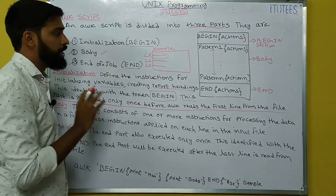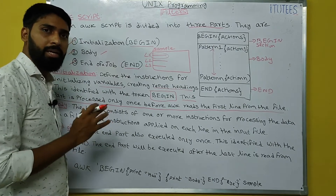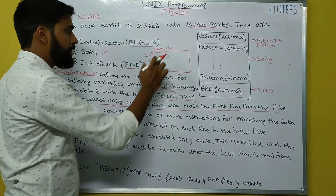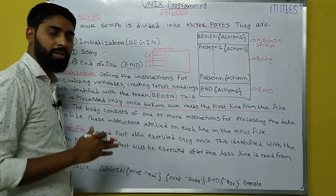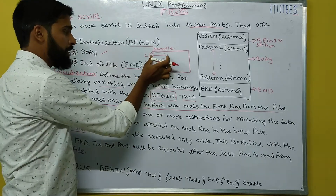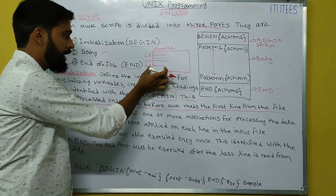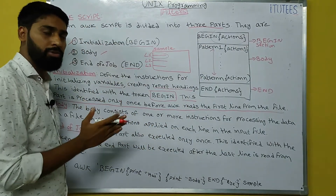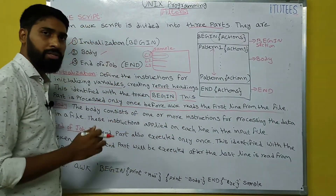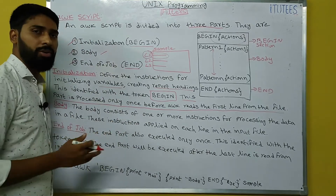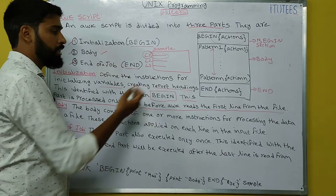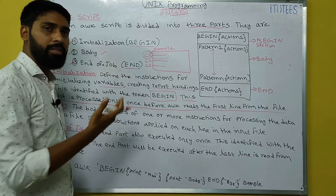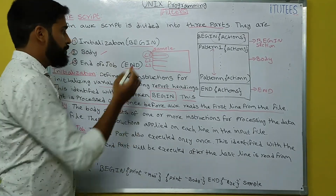The AWK command is used to write instructions that are applied on each line in the file — line one, then line two, then line three. The instructions written in the BEGIN section are executed before AWK reads the first line from the input file. Normally we write initialization of variables or report headings in BEGIN. For example, if the file contains employee details and you want to find salaries greater than 40,000, you can put a heading like 'employee names who got more than 40,000 salary.'